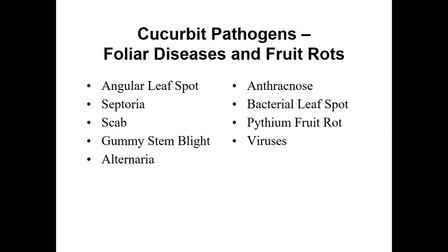Hello, this is Elaine Roddy from the Ministry of Agriculture, Food and Rural Affairs in Ridgetown. This is part three of the Cucurbit IPM workshop, and in this section we're going to be looking at the foliar diseases and fruit rot pathogens. It's quite a substantial list, and it is really easy to confuse the symptoms of many of these diseases with each other and with some of the diseases described in previous sections.